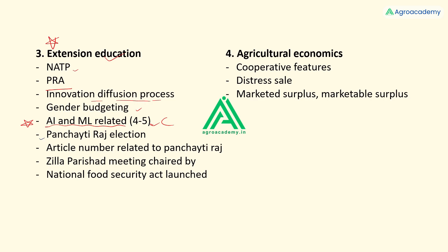Some factual questions were asked, like from Panchayati Raj — how the election of the Panchayati Raj president is done and the related article number. A question regarding Zilla Parishad was also asked. One was totally factual: when was the National Food Security Act (NFSA) launched. Overall, extension had moderate level questions with significant weightage.